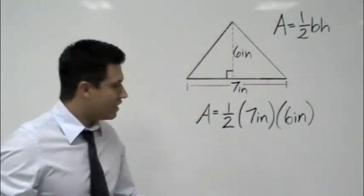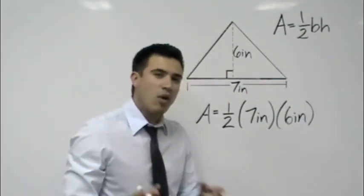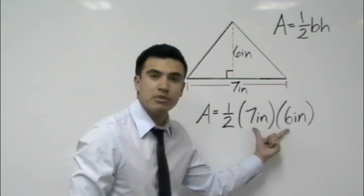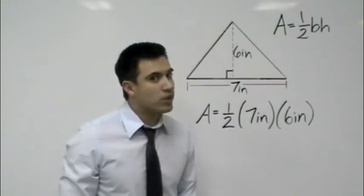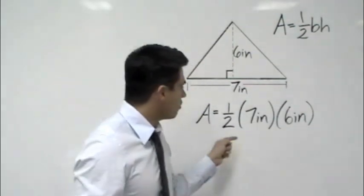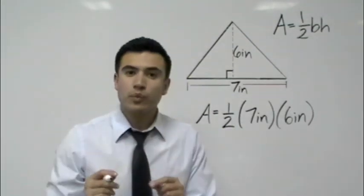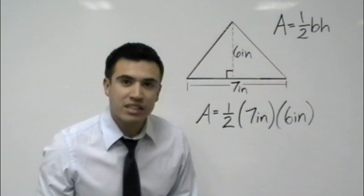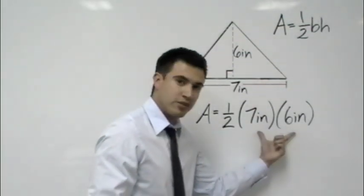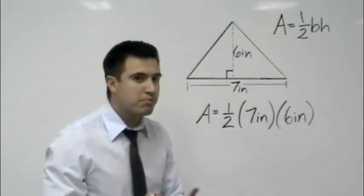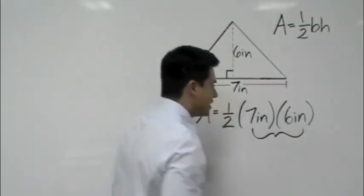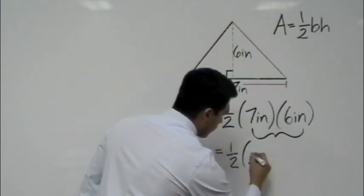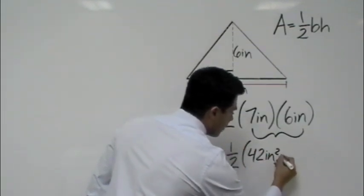Seven inches times six inches. I always recommend when finding the area of a triangle to go ahead and multiply your base times your height first. I know what you're saying, but Brian, order of operations says go from left to right and you are correct. But the three operations we have here are multiplication. So we can go ahead and multiply these first and then divide it by two. It's much easier that way. So I'm going to go ahead and multiply six times seven.